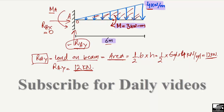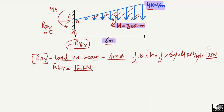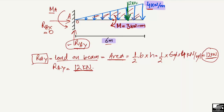It should be kept in mind that this 12 kilonewton load acts at the centroid of the triangle. The centroid of this triangular load will be located here, and the 12 kilonewton resultant force acts at this point. Now we need to find out the moment at point A.